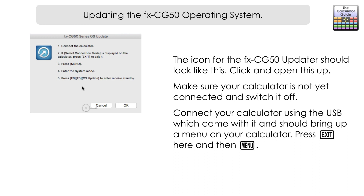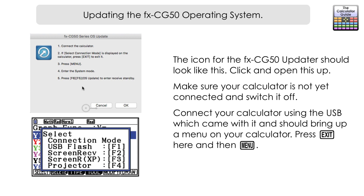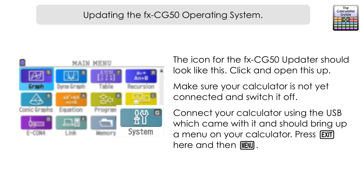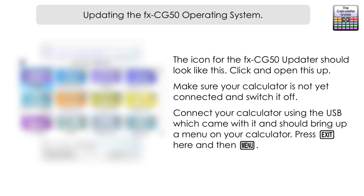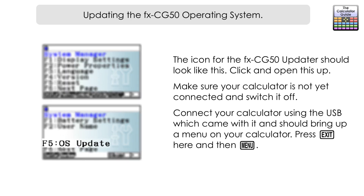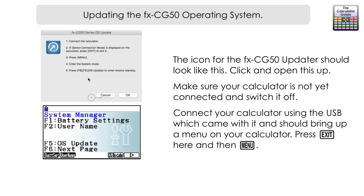Now follow the on-screen instructions. Use the USB cable included with your CG50 to connect the calculator to your computer. This should automatically bring up a menu giving you a choice of how you want the information from your calculator to be received. We don't need this right now, so press exit. When you get the next message, press menu to go back to the menu screen, then navigate to system mode. Once in the system menu, press F6 to go to the next page, then F5 for OS update.